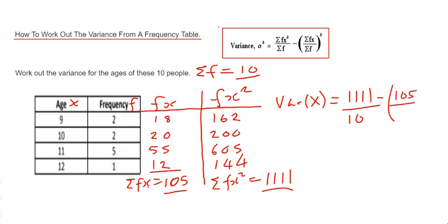And we've got to take off in a bracket sigma fx which was 105, divided by sigma f again which is 10, and that is squared. So if you've got a scientific calculator, then you should be able to type that in as it appears now on the page.